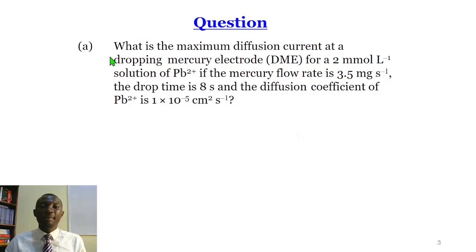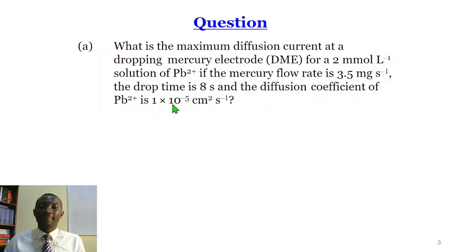Here is the question. It says: what is the maximum diffusion current at the dropping mercury electrode (DME) for a 2 millimole per liter solution of lead if the mercury flow rate is 3.5 milligrams per second? The drop time is 8 seconds and the diffusion coefficient of lead is 1 × 10⁻⁵ centimeters squared per second.